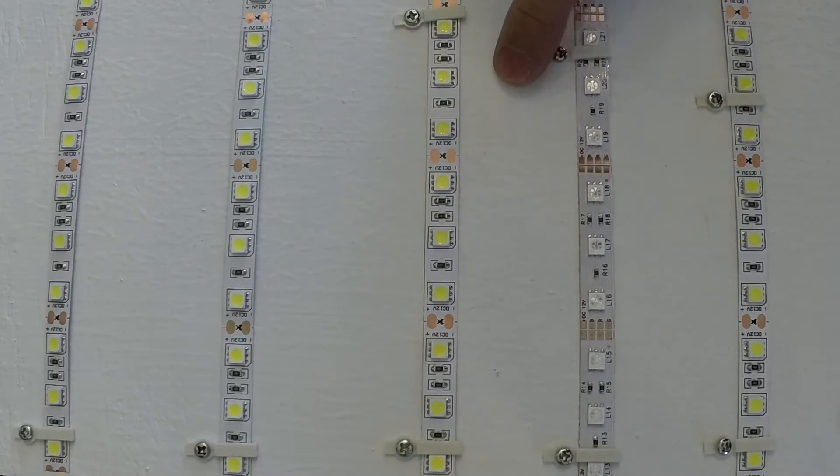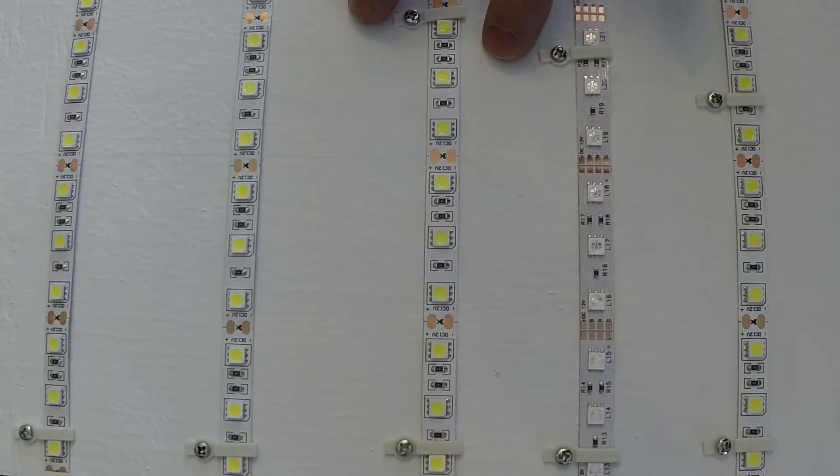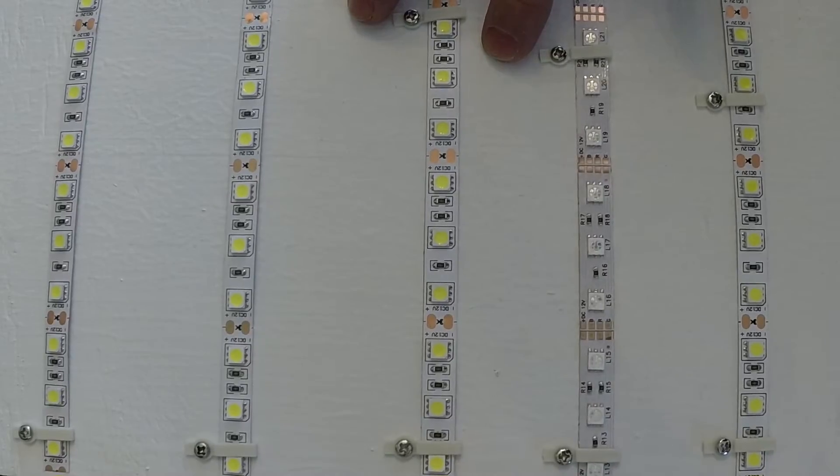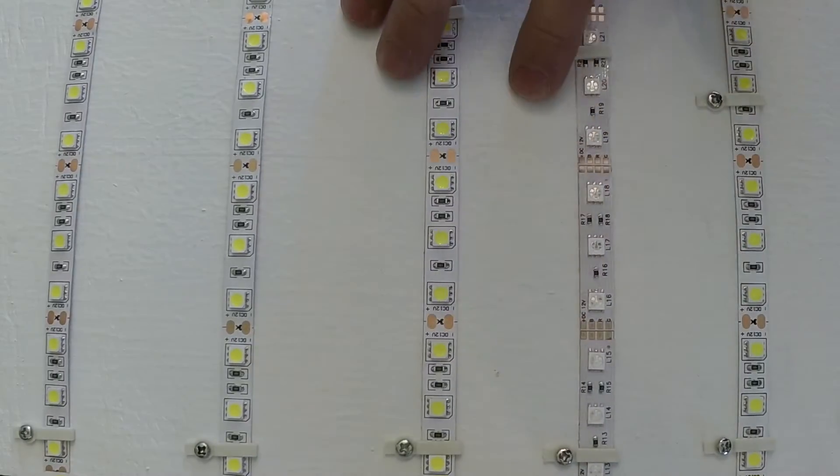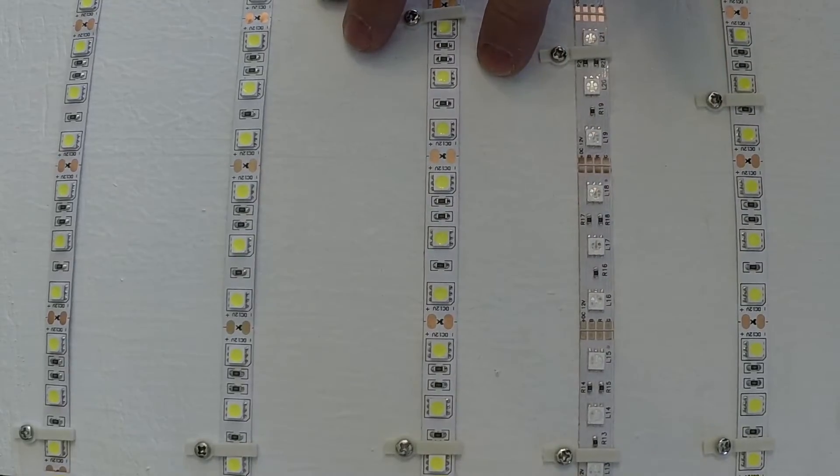By the time you get to the end of your strip, the last LED is going to be more dim than the first one because of voltage drop. And you're going to put an increased load and increased temperature requirement on the first few LEDs. So that's not how you wire these strips if you want to be efficient.